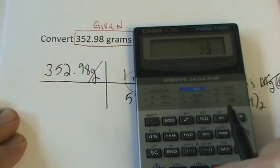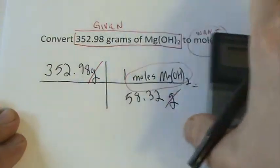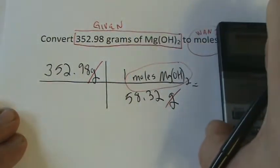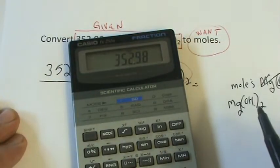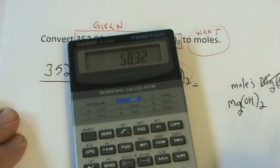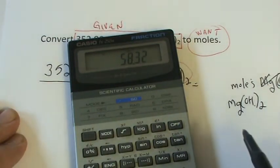Let's take 352.98, and we can multiply it by one, and then let's divide it by 58.32. 58.32 is how much one mole of Mg(OH)2 weighs.